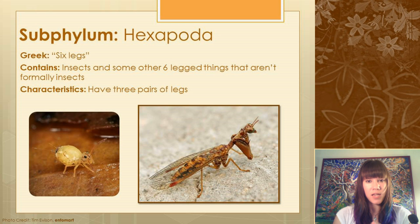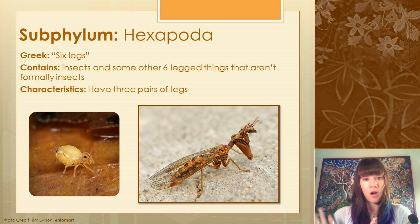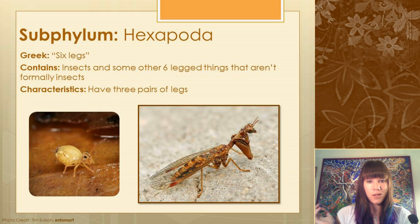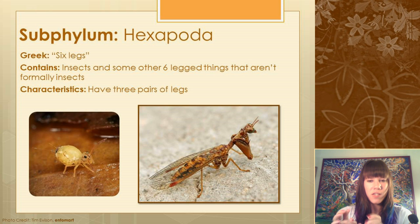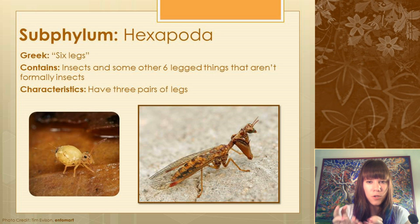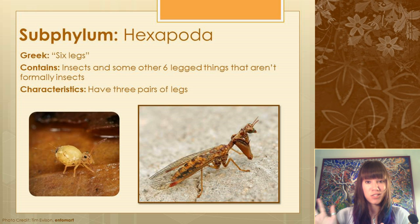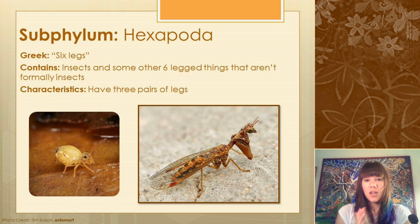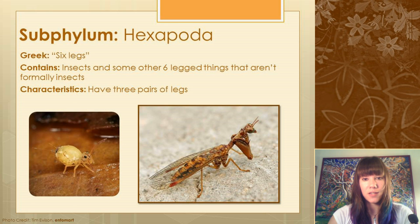Hexapods include insects, but not all hexapods are insects. In Greek, hexapod just means six legs, and it contains everything from tiny critters that live in the soil all the way up to wasps and beetles — your very typical insects. Their characteristics are three body segments and three pairs of legs.